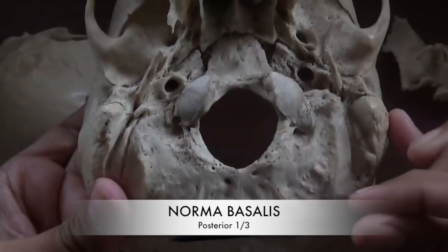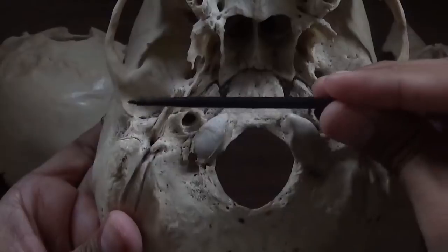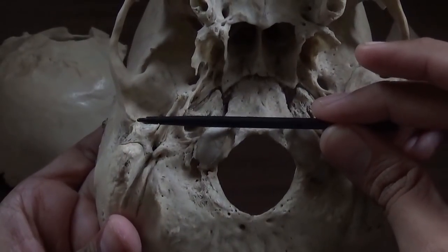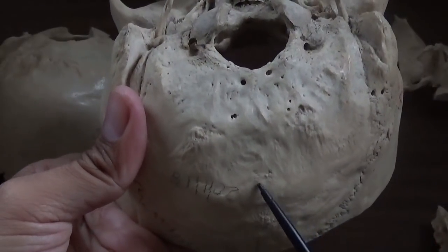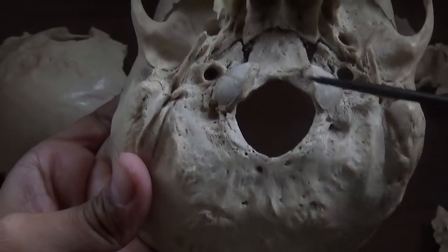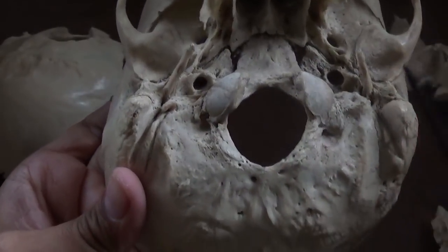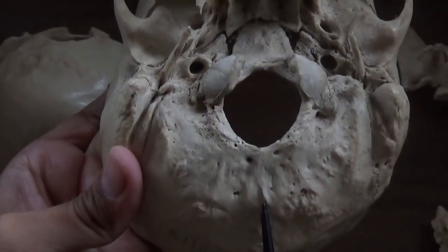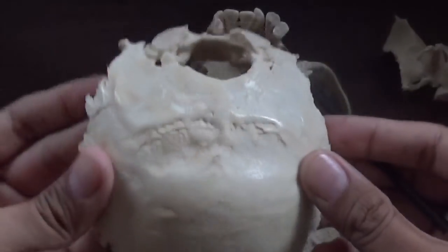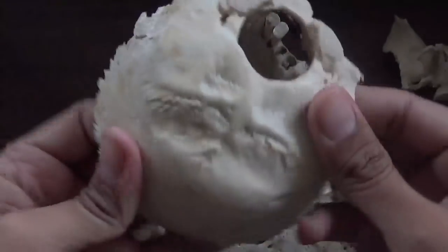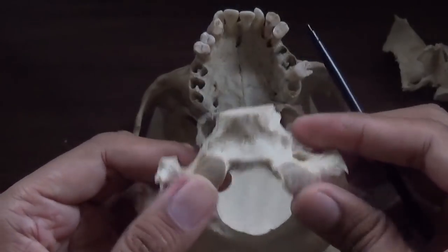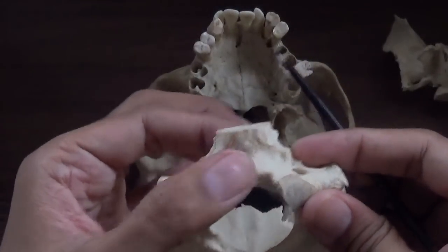The posterior part of the norma basalis extends from the arbitrary line at the anterior margin of the foramen magnum to the external occipital protuberance and superior nuchal line. For descriptive purposes it is subdivided into a median area and two lateral areas. The occipital bone consists of the squamous part, the condylar part, and the basilar part.